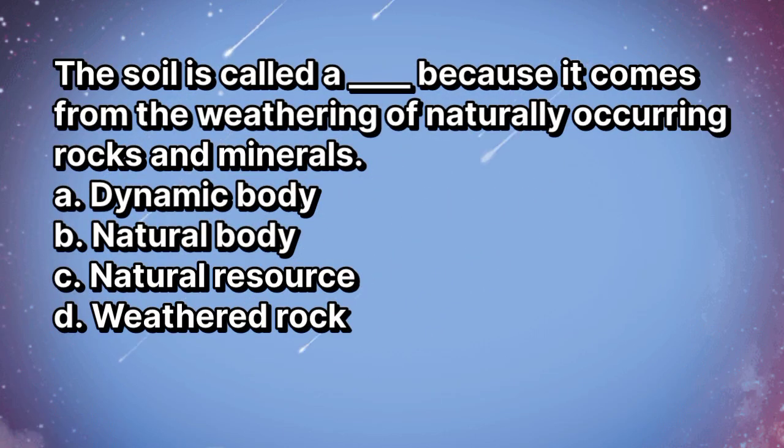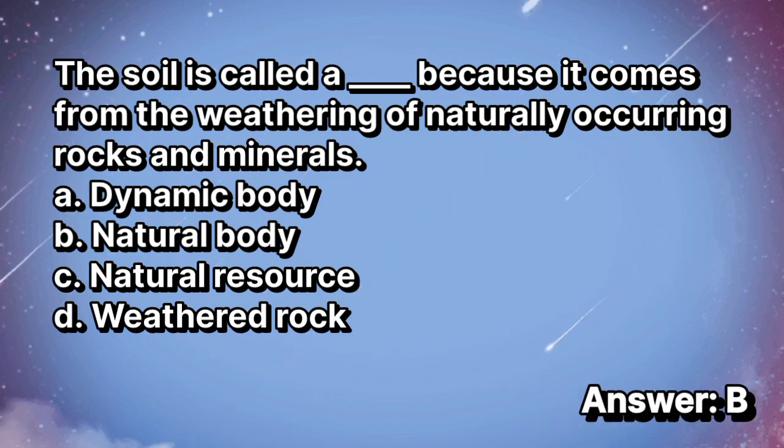The soil is called a blank because it comes from the weathering of naturally occurring rocks and minerals. A. Dynamic body. B. Natural body. C. Natural resource. D. Weathered rock. The answer is letter B.